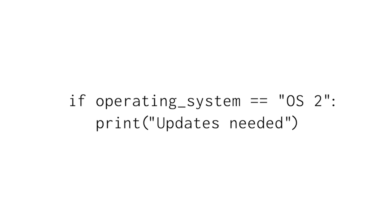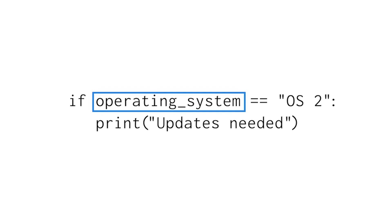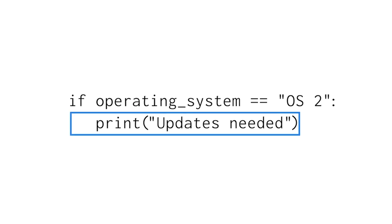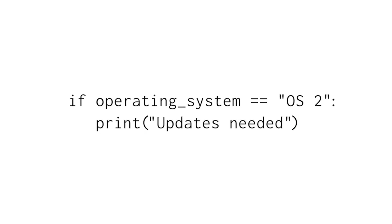Let's more closely investigate an example that uses the double equals sign. We'll focus on an example that prints an updates needed message when a particular operating system is running. We've created a condition that checks if a device's operating system matches a specific string. We'll use the double equals sign — the operating system variable is on the left, and the string OS2 is on the right. If the condition evaluates to true, it performs the action on the next indented line and prints updates needed. If it's false, the message will not print.